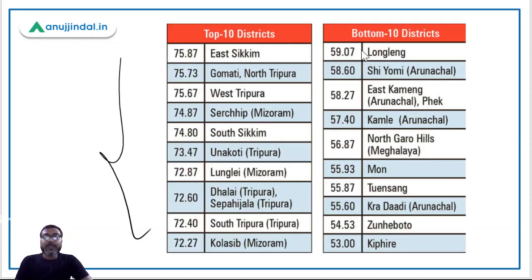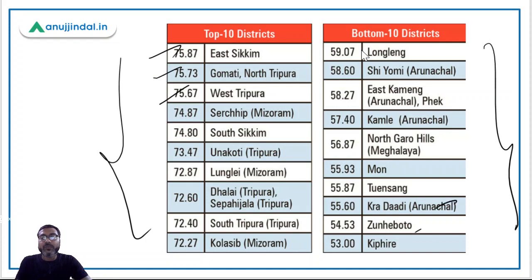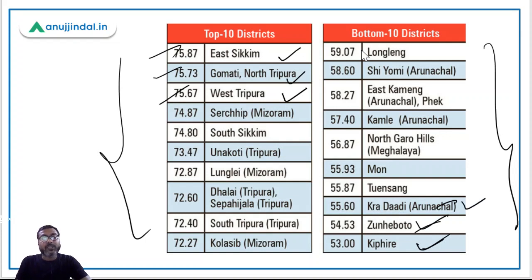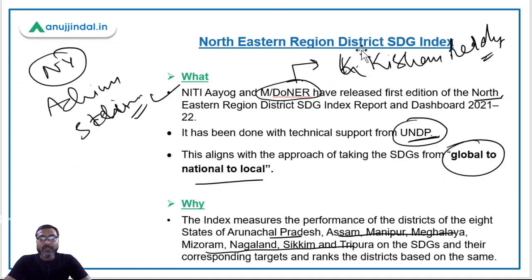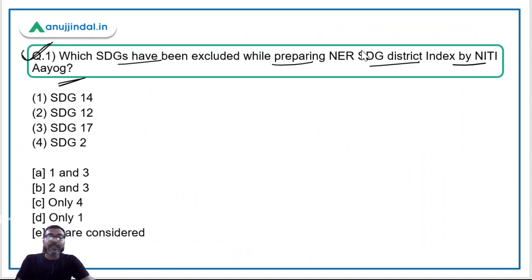The minimum score is 53, which belongs to the Kiphire district of Nagaland. You do not have to remember all 20 districts — just the top three and the bottom three. Top three: East Sikkim from Sikkim at number one with a score of 75.87, then Gomati and West Tripura. Bottom three: Kiphire from Nagaland at the lowest, then Zunheboto, and then Kurung Kumey of Arunachal Pradesh.